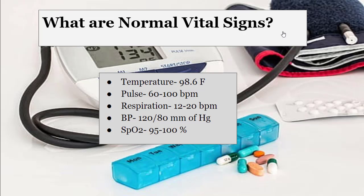Normal oxygen saturation is 95 to 100%. If the oxygen saturation is 90 to 95%, elevate the head of the bed and give deep breath respirations. If the saturation is less than 89%, inform the doctor and put the patient on ventilation.